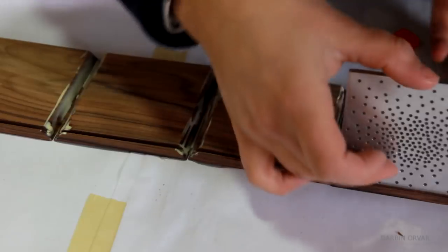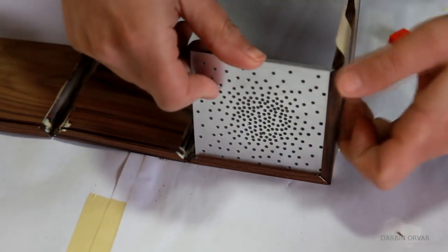And using masking tape as a clamp when gluing together mitered corners works really great.